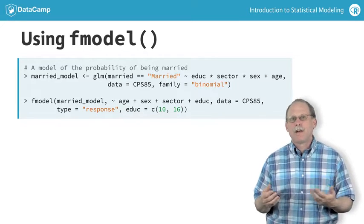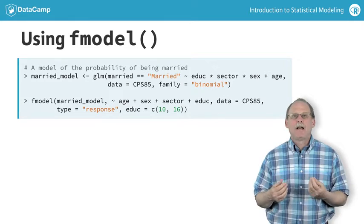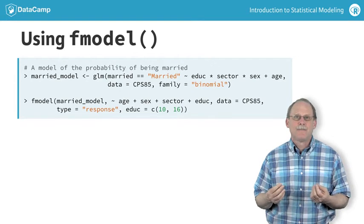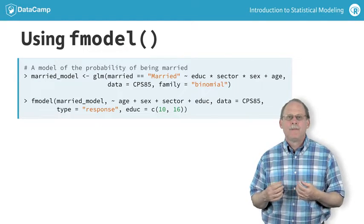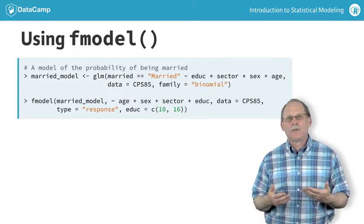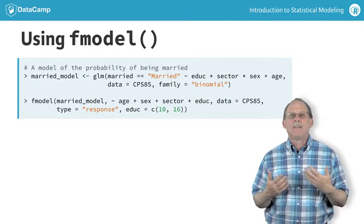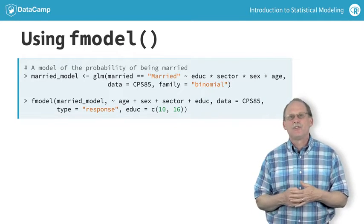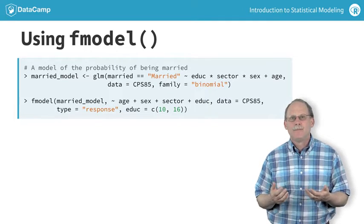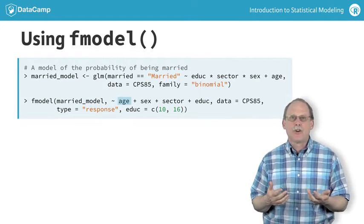The conventional format for graphing a model puts the response variable on the y-axis. In this model, that's the probability of being married. The most important explanatory variable to you goes on the x-axis. Of course, what's most important depends on your purpose in constructing and displaying the model. I've selected the age variable.